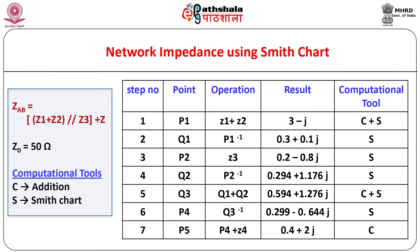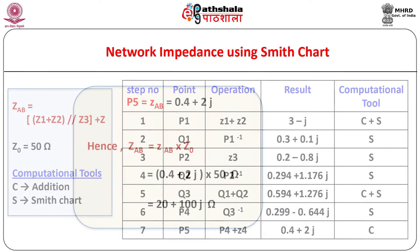Observing the entries in the table, we finally obtain point P5 representing ZAB = 0.4 + 2j. Hence, the required impedance across the output terminals ZAB equals normalized ZAB multiplied by Z0, which gives 20 + 100j ohm. The location of various points on the Smith chart involved in the solution are shown accordingly.